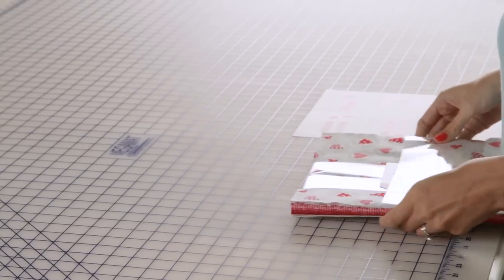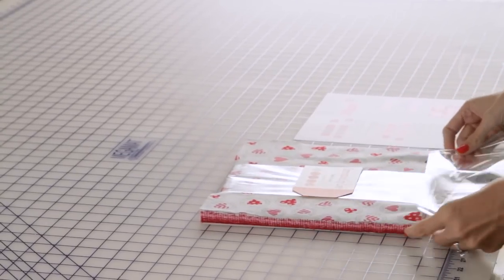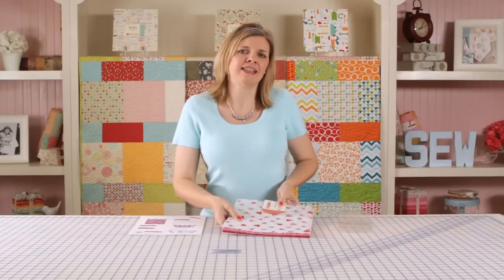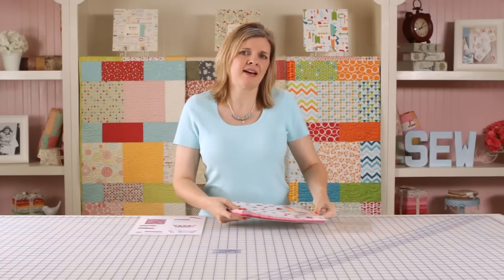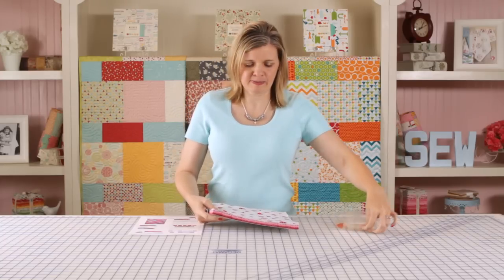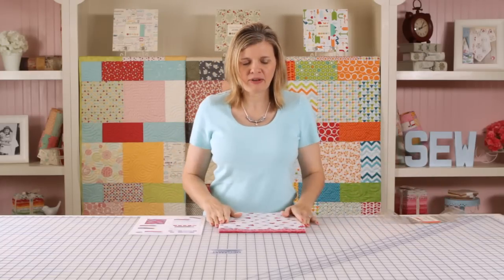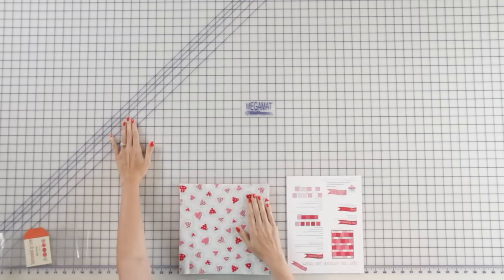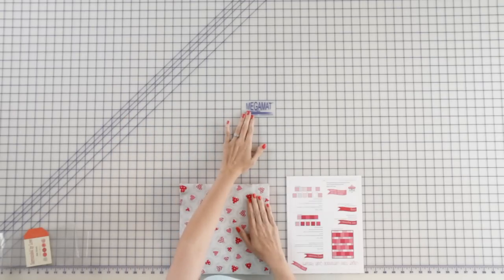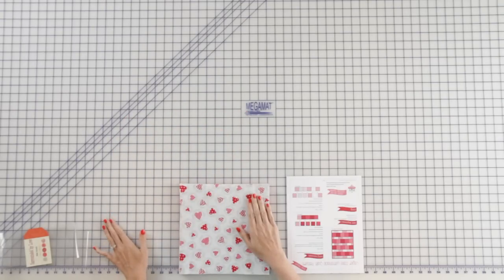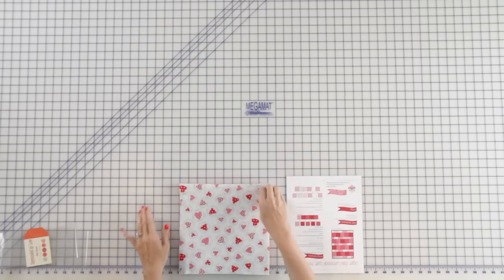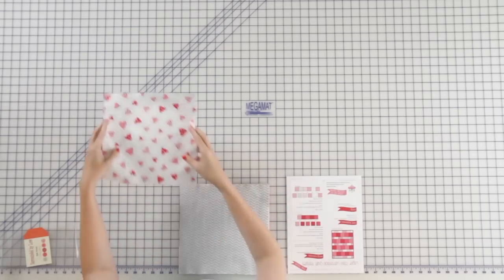Our first step is to divide your layer cake into stacks. We're gonna make one stack of 18 light prints and one stack of 20 dark prints. So I'm gonna divide them out on the table. I'm gonna make one light stack, one dark stack, and then we're gonna have four prints that we don't use today. I'm gonna put them over to the side. So let's divide our layer cake.